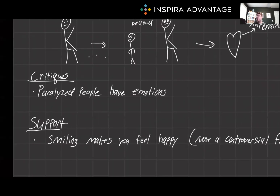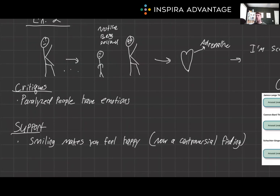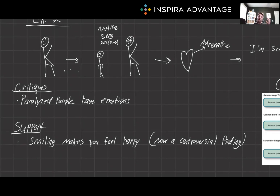Despite these criticisms, some modern studies do support aspects of the James-Lange theory. Research has shown that specific physiological responses can correlate with certain emotions. For instance, studies have found that when people make facial expressions corresponding to different emotions, they also exhibit slight variations in heart rate and skin temperature. These findings suggest that physiological changes can play a role in shaping emotional experiences — for example, smiling might make you feel happier.